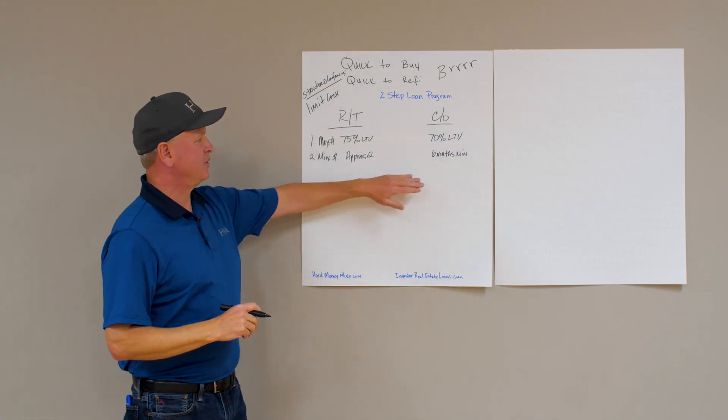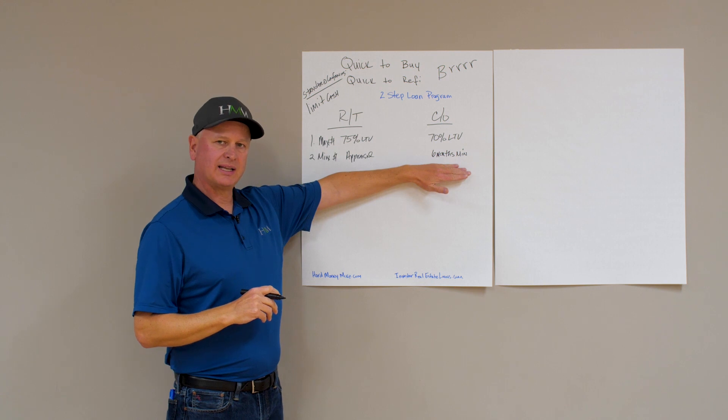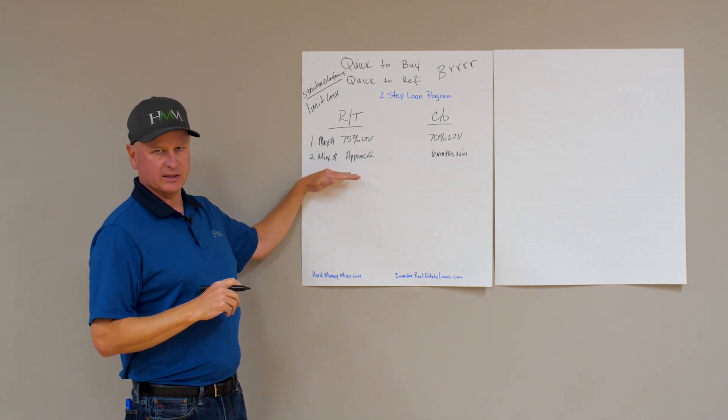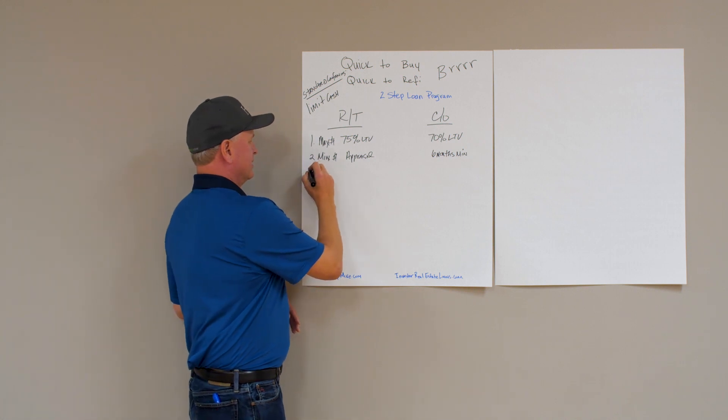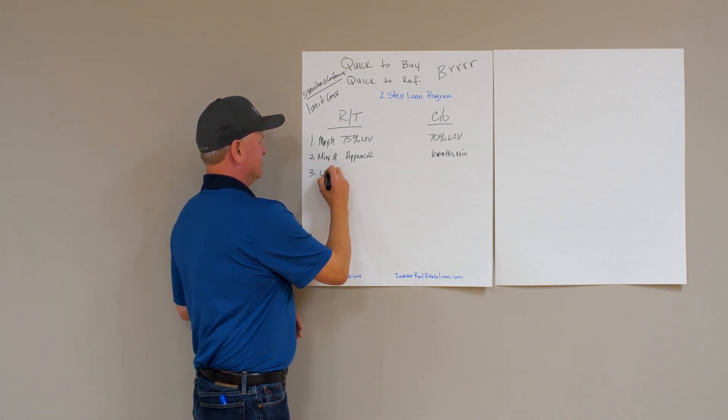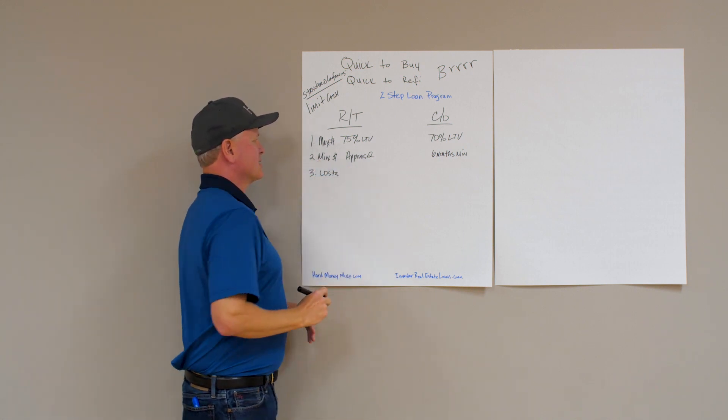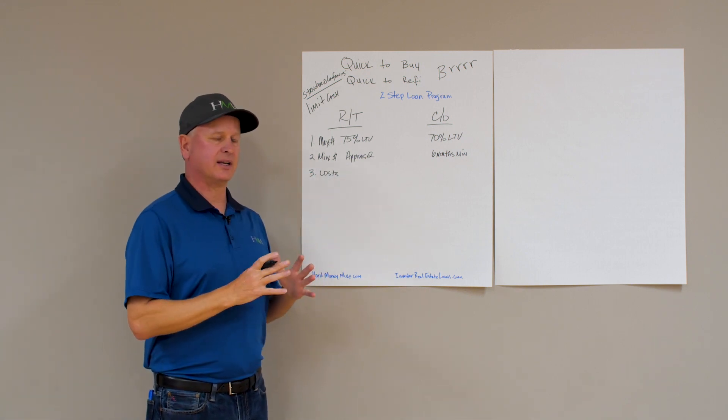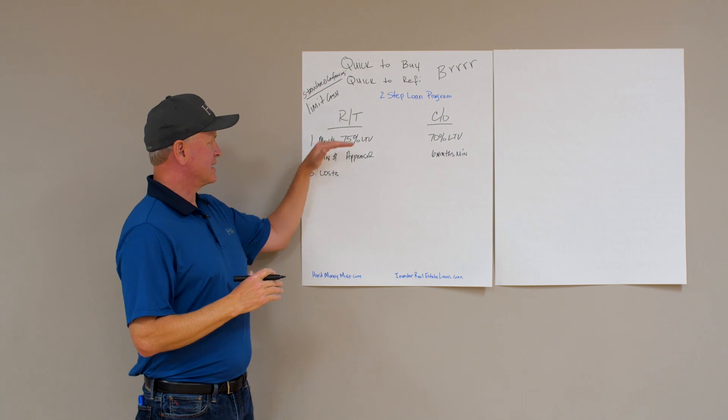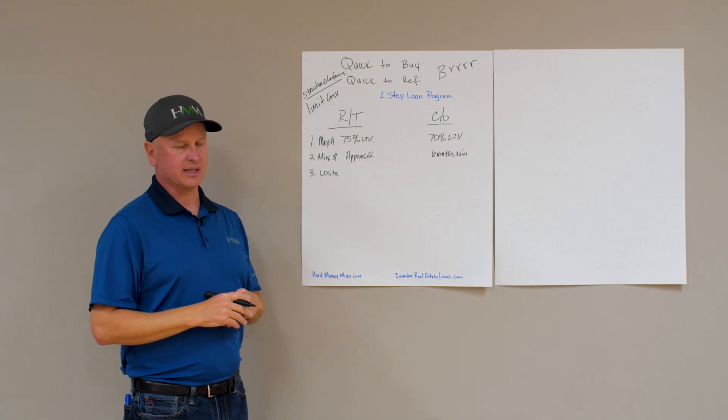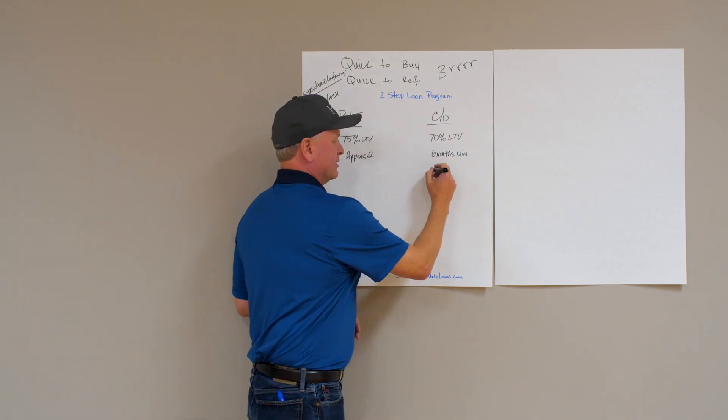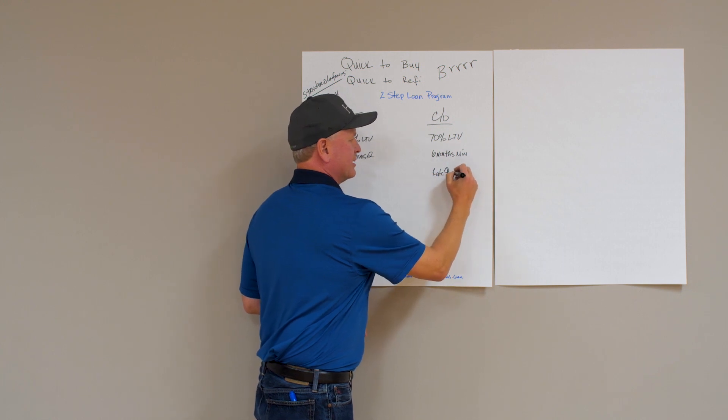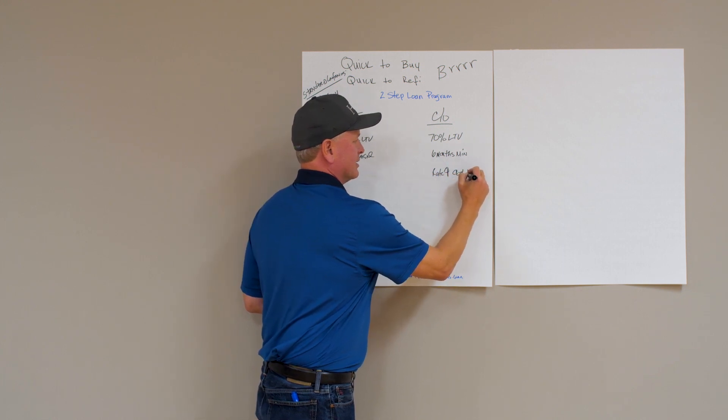So here you're going to keep your short-term loan that probably has a higher interest rate a lot longer. The other thing is costs. On a rate and term, the lenders look at this as a little less risky, so on cash out your rate will be a little bit higher and your costs are going to be a little bit higher too.